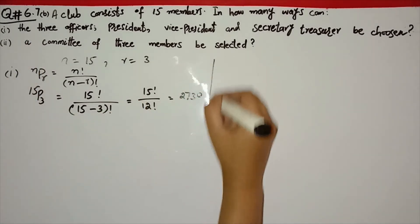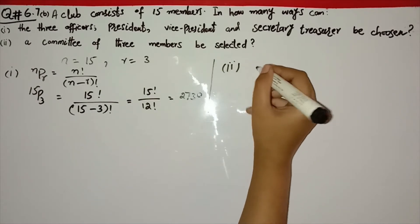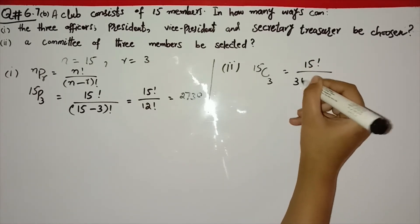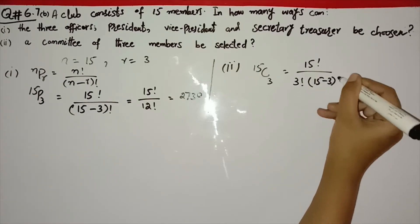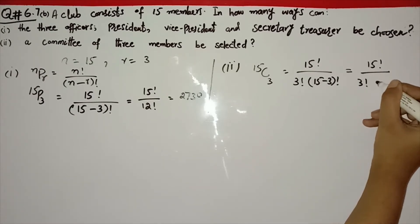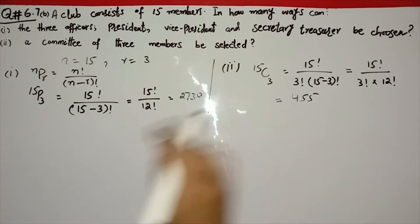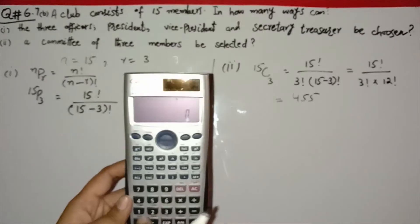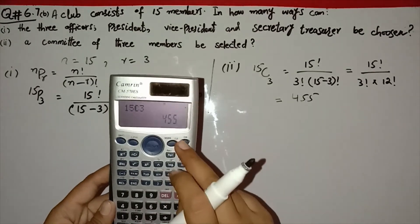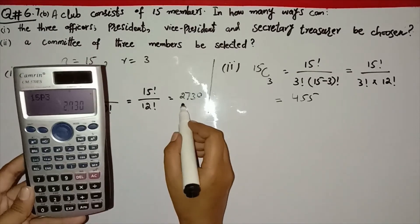For the second part, we apply combination. With n equal to 15 and r equal to 3, we calculate 15C3 as 15 factorial over 3 factorial into 12 factorial, which equals 455. So 15C3 is 455 and 15P3 is 2730.